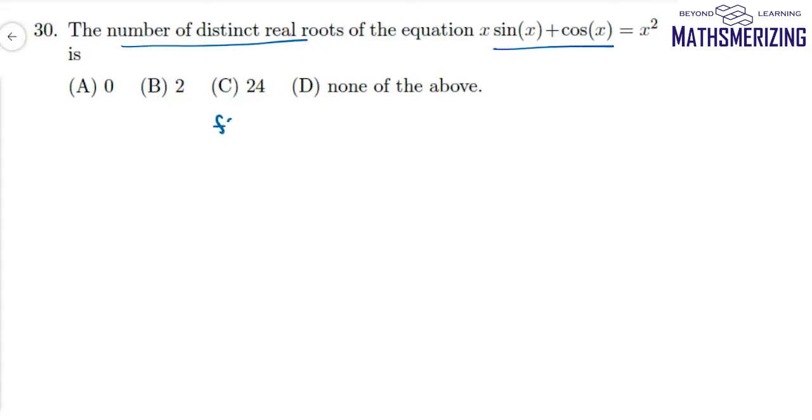I'll define f(x) = x sin(x) + cos(x) - x². Differentiating, f'(x) = x cos(x) + sin(x) - sin(x) - 2x. The sin(x) terms cancel, giving x(cos(x) - 2) = 0.